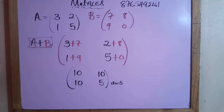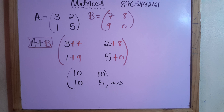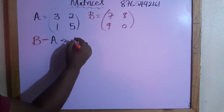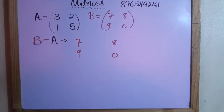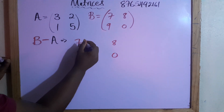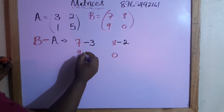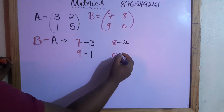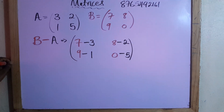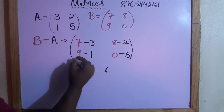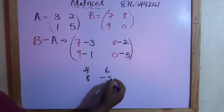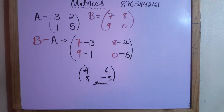Now let's look at subtracting — B subtract A. One thing students must remember: the order matters, so we put B first. B is seven, eight, nine, zero, and then we subtract A, which is minus three, minus two, minus one, minus five. So: seven minus three is four, eight minus two is six, nine minus one is eight, zero minus five is negative five.